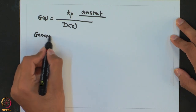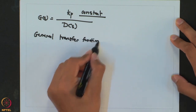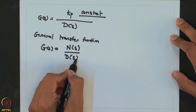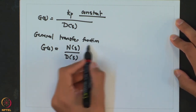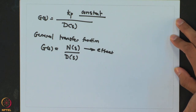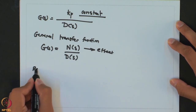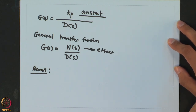But there are some examples of systems — especially when we have a controller combined with the system — where the numerator need not be independent of S. A general transfer function will be of the form N(s) over D(s), where N(s) and D(s) are polynomials in S. In this lecture we will see what effect N(s) has on the dynamics when it is a function of S.